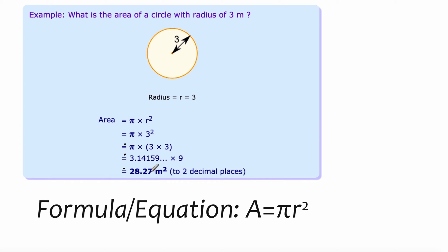And then we have the answer 28.27 meters squared. So this is rounded to two decimal places, because 3.14 is not exactly pi. It goes on for a while. Alright, so that's why we have these symbols, as opposed to equal.